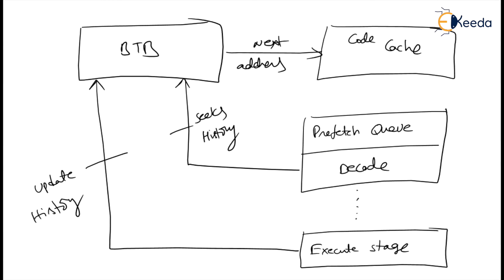When a branch instruction is first taken, the CPU allocates an entry in the Branch Target Buffer to associate the branch instruction's address with its destination address, and initializes the history used in the prediction algorithm. As instructions are decoded, the CPU searches the Branch Target Buffer to determine whether it holds an entry for the corresponding branch instruction. When there is a hit, the CPU uses the history to determine whether the branch should be taken or not, and uses the target address to begin fetching and decoding instructions from the target path.